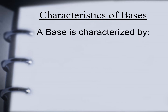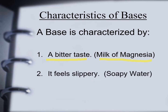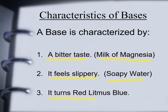Characteristics of bases: a base is characterized by a bitter taste — for example, milk of magnesia. It also feels slippery; examples include soapy water, detergent soap, and shampoo. All slippery substances belong to the bases group. Additionally, bases turn red litmus paper to blue — once you place red litmus paper into a basic solution, it will turn blue.